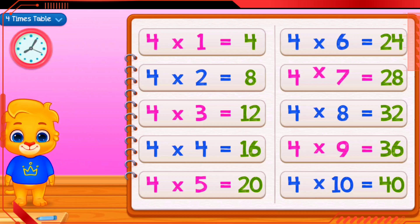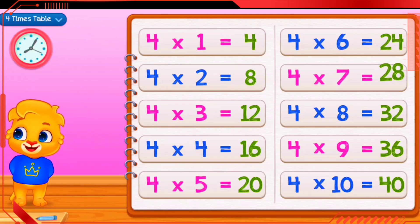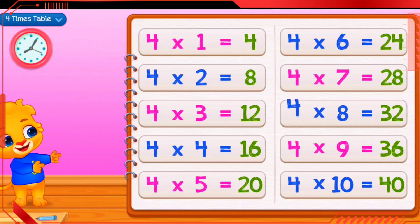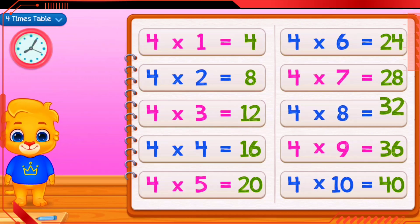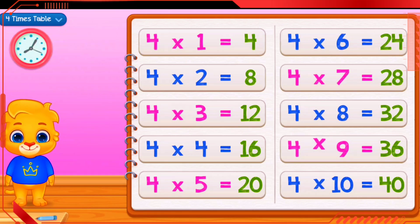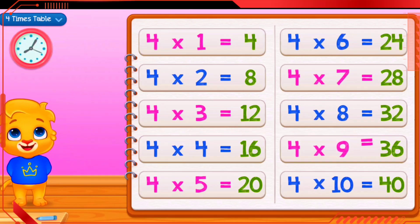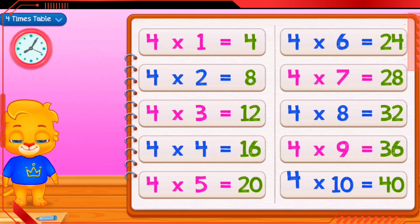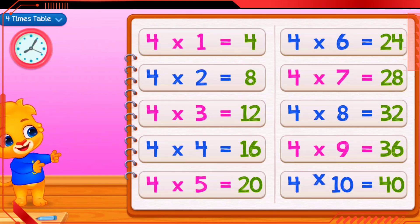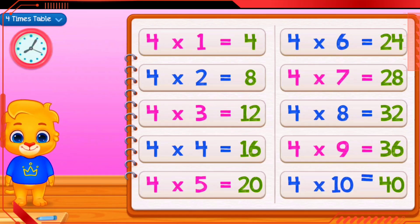4 times 7 equals 28. 4 times 8 equals 32. 4 times 9 equals 36. 4 times 10 equals 40.